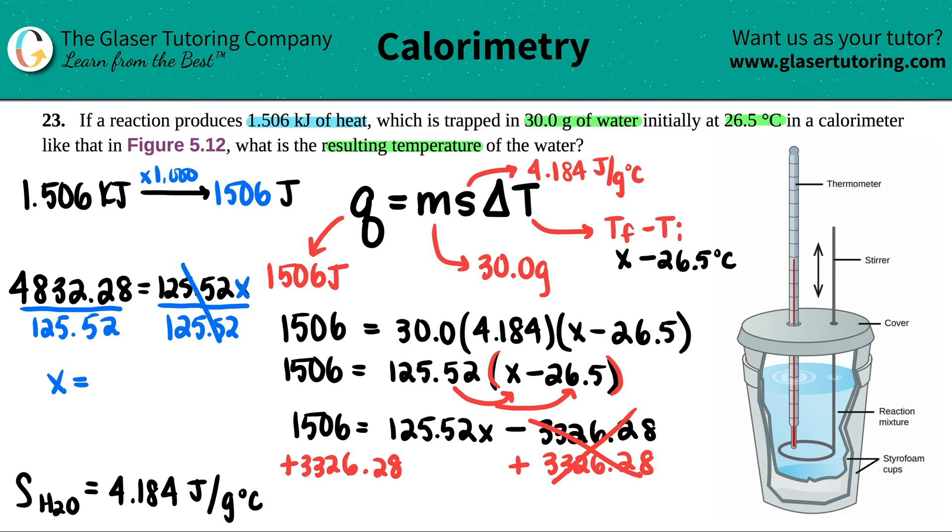So we'll say 38.5 degrees Celsius. 38.5 degrees Celsius because we were solving for the final temp, which is what we labeled as X. So this is basically your final temp. TF, the resulting temperature of the final temp was 38.5 degrees Celsius.